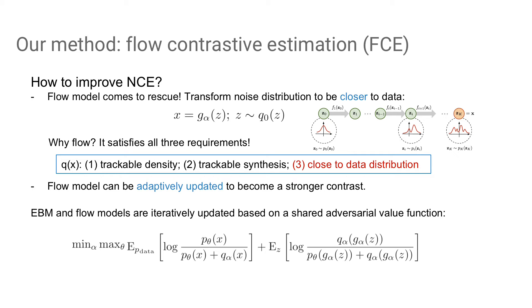Our idea, flow contrastive estimation, is to use a flow model to transform the noise distribution q0 to be closer to data. Why flow? Because it satisfies all three requirements of q in NCE. Even better, the flow model can be adaptively updated to become a stronger contrast. To this end, EBM and flow models are iteratively updated based on a shared adversarial value function as follows.